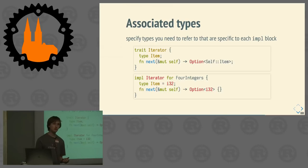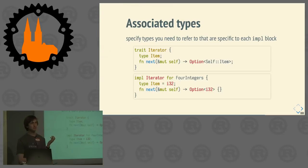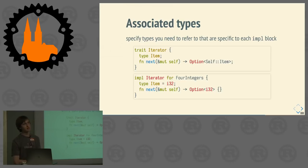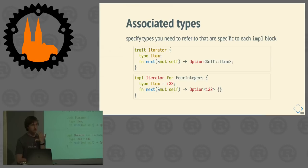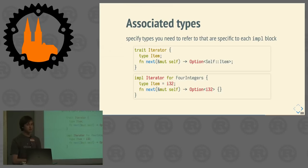It's a generic type that becomes concrete in your implementation block. For example, if I have a data type called `ForIntegers`, my return type is an integer. If I had a data type wrapping a file to read lines from it, my return type in this iterator would be String. Associated types also allow you to give constraints — for example, a debuggable iterator where the item type needs to implement Debug.